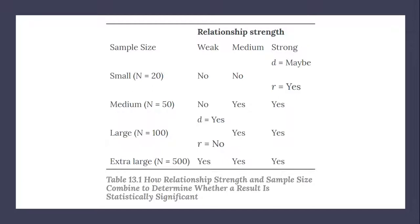It's extremely useful to be able to develop this kind of intuitive judgment. One reason is that it allows you to develop expectations about how your formal null hypothesis tests are going to come out, which in turn allows you to detect problems in your analyses. For example, if your sample relationship is strong and your sample is medium, then you would expect to reject the null hypothesis. If your formal null hypothesis test indicates otherwise, then you need to double-check your computations and interpretations. A second reason is that the ability to make this kind of intuitive judgment is an indication that you understand the basic logic of this approach in addition to being able to do the computations.